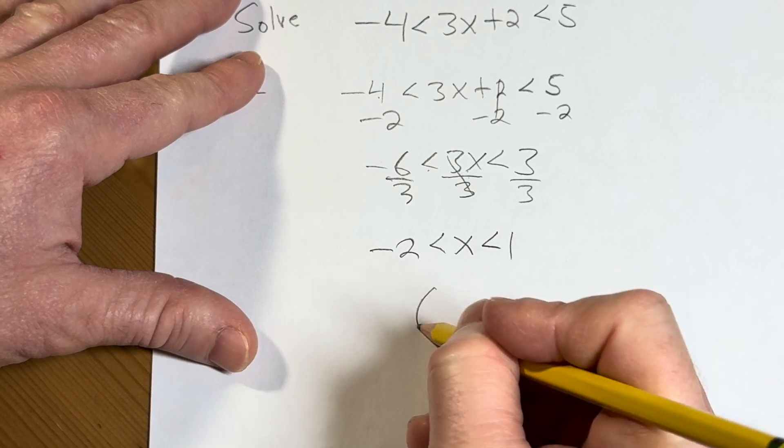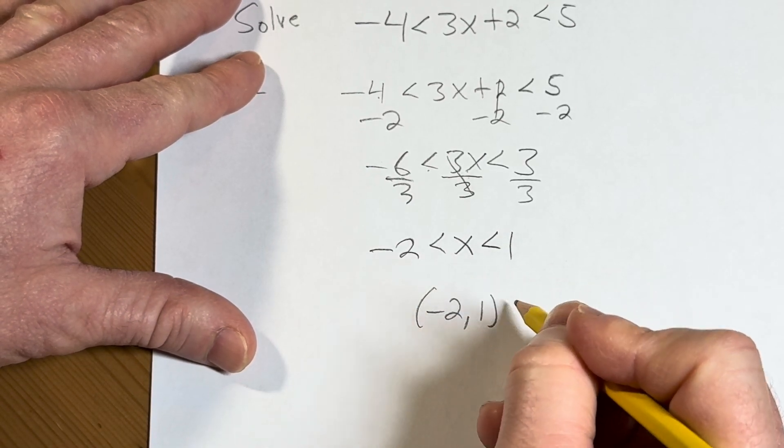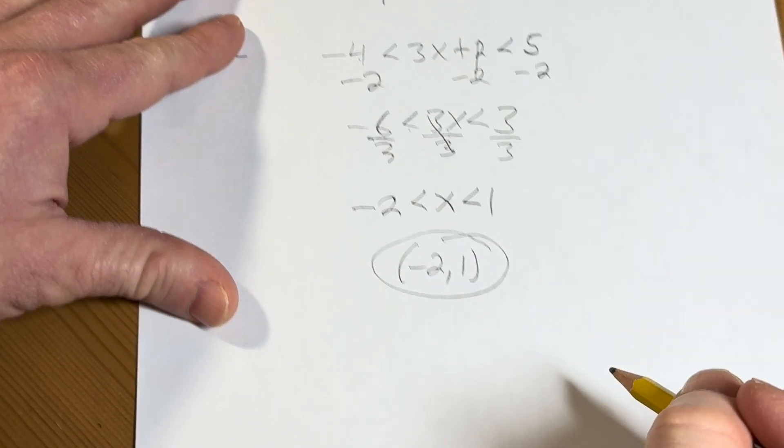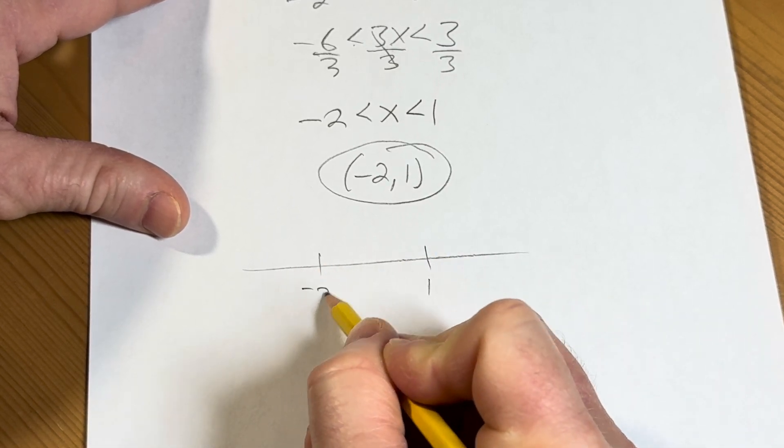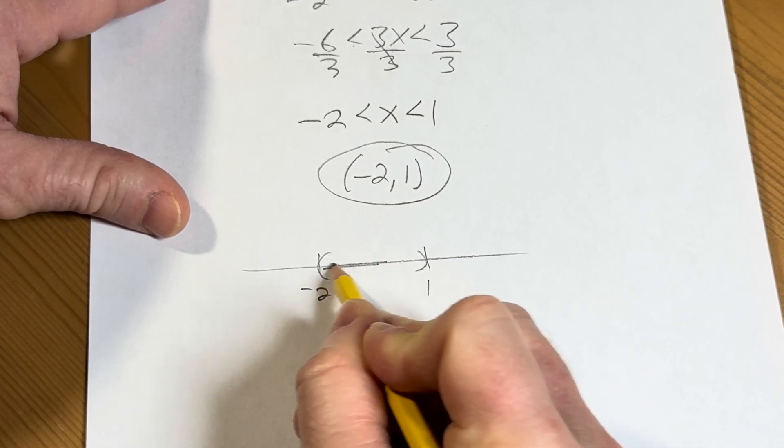So in interval notation, this would be negative 2 comma 1, just like that. And the graph of this would look like this.